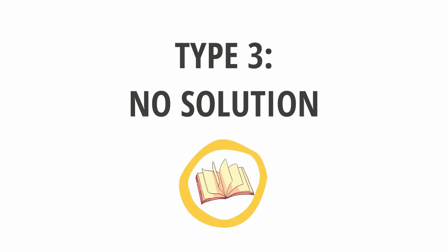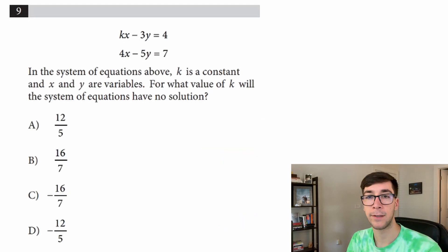The last type of system problems you'll see is a no solution one, and if you look at it it's very intimidating. If you don't actually study this you won't know how to solve it, but it actually is one of the easier problems you'll encounter if you know what you're doing. So let's read the question: in the system of equations above, k is a constant and x and y are variables. For what value of k will the system of equations have no solution?